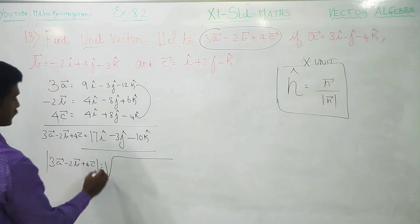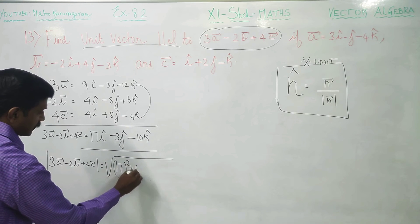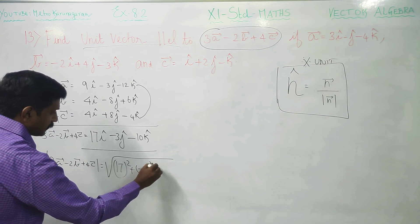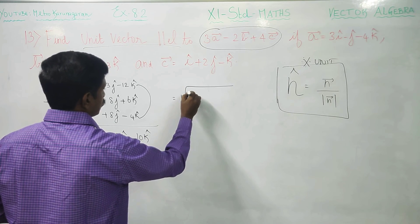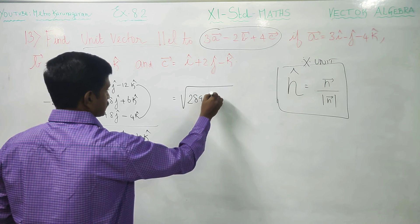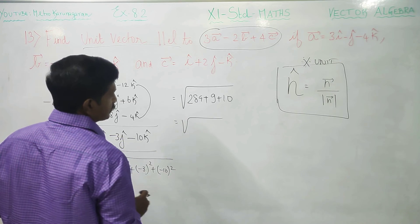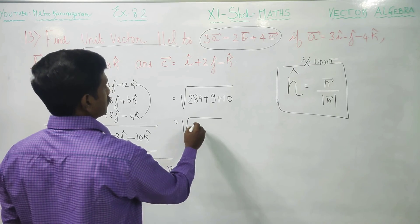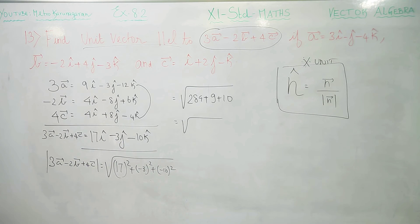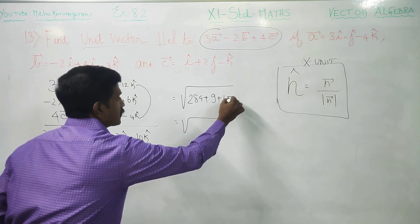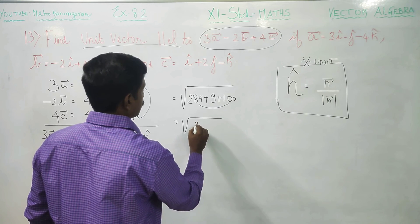Magnitude means measurement. Z equal to square root of 17 square plus minus 3 square then minus 10 square. Your answer will be square root of 289 plus 9 plus 100. 17 into 17 is 289, 3 square is 9, 10 square is 100, about 398.